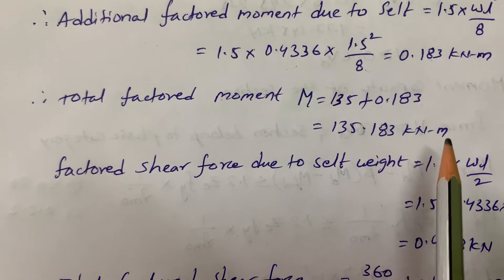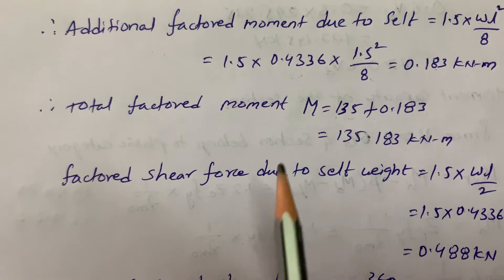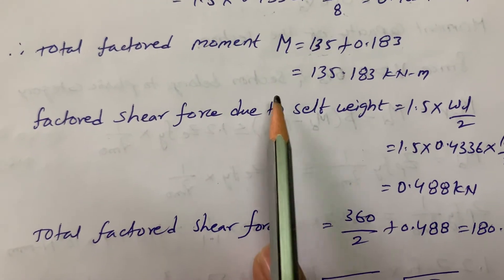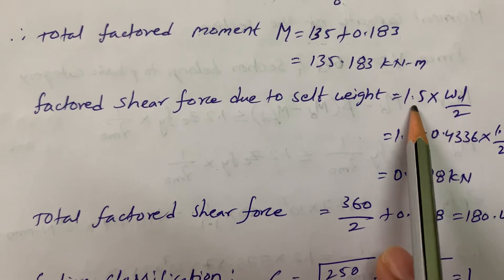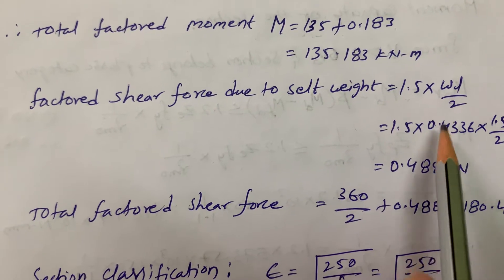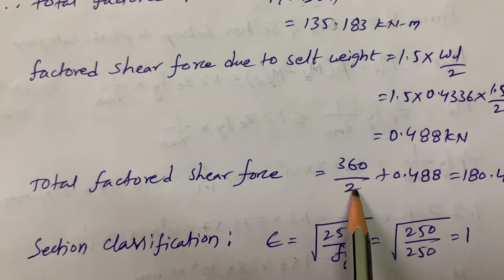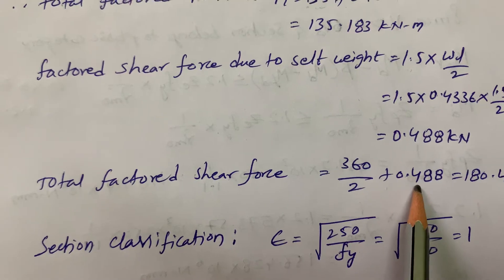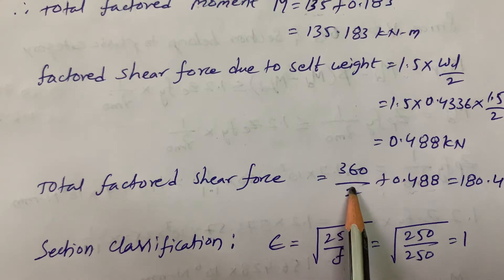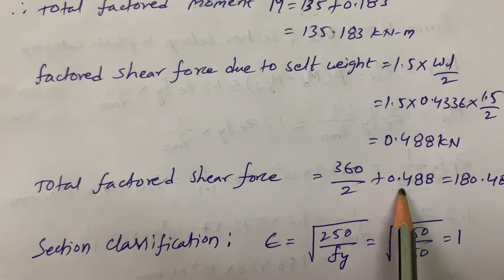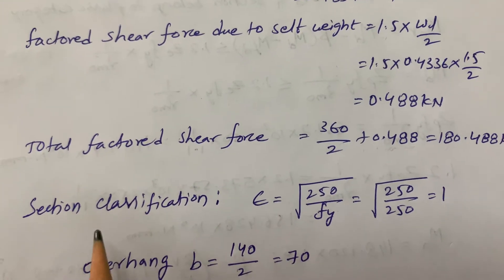The factored shear force for a simply supported beam uses the formula VF = WL/2. The total factored shear force is 360/2 plus the contribution from self-weight, giving 180.488 kN. Here 360 kN is the concentrated load acting at mid-span.